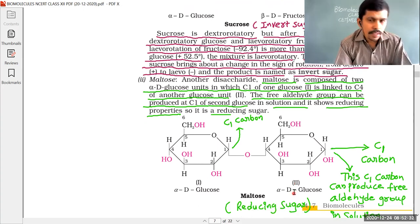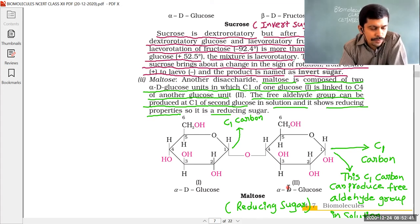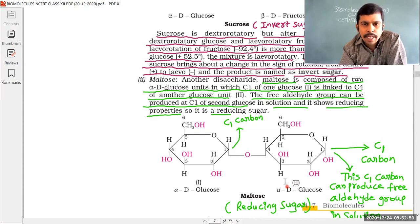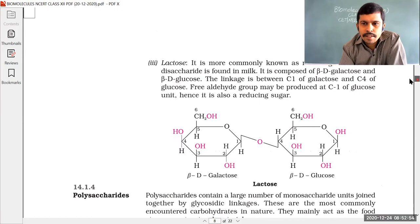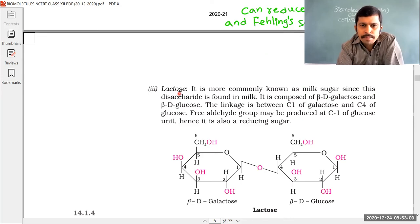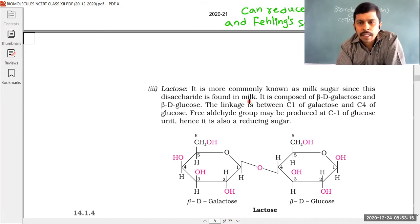Question 18 asks: which one of the following statements is not true regarding lactose? From the NCERT textbook, the formula of lactose is also C12H22O11. Lactose is also an example of a disaccharide and is mainly found in milk, so lactose is called milk sugar.